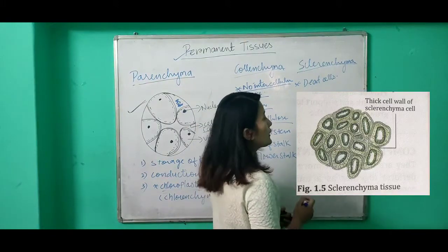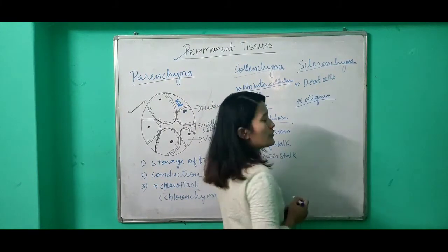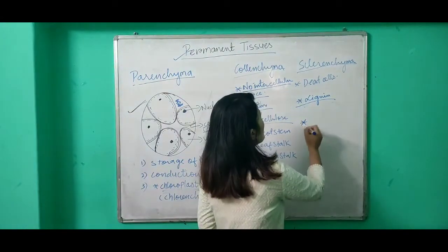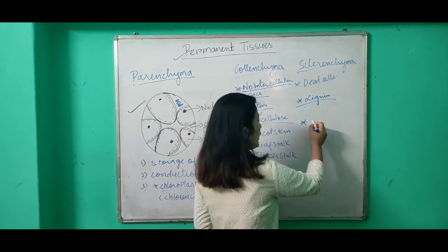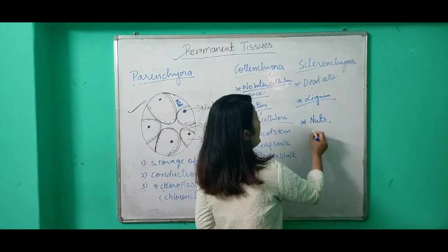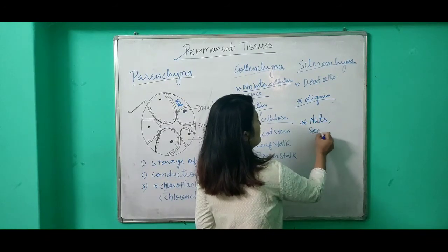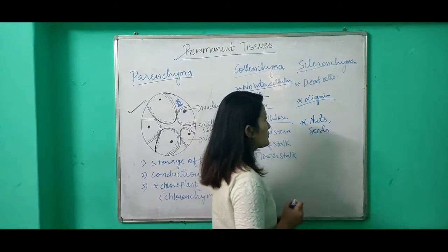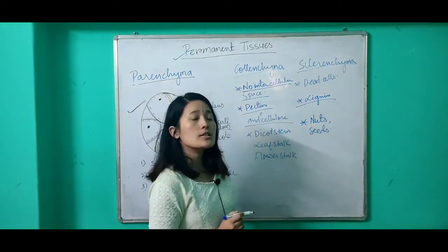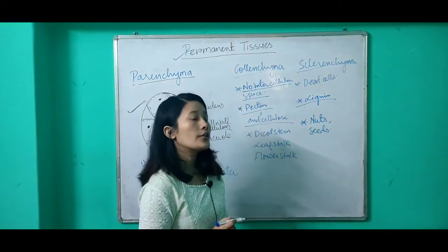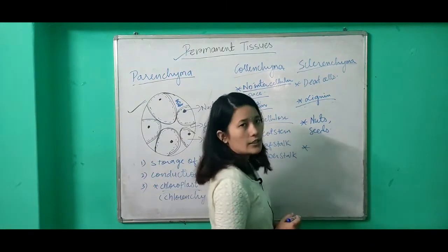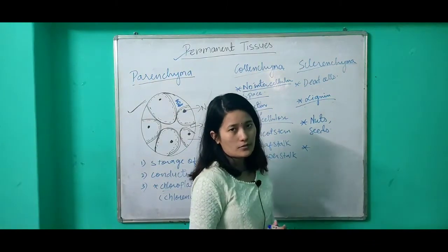The cell walls or corners of sclerenchyma cells are thickened due to the presence of lignin. They are present in the outer covering of nuts and seeds — the hard covering is because of sclerenchyma cells. The function of sclerenchyma is to provide mechanical strength, toughness, and rigidity to the plant.